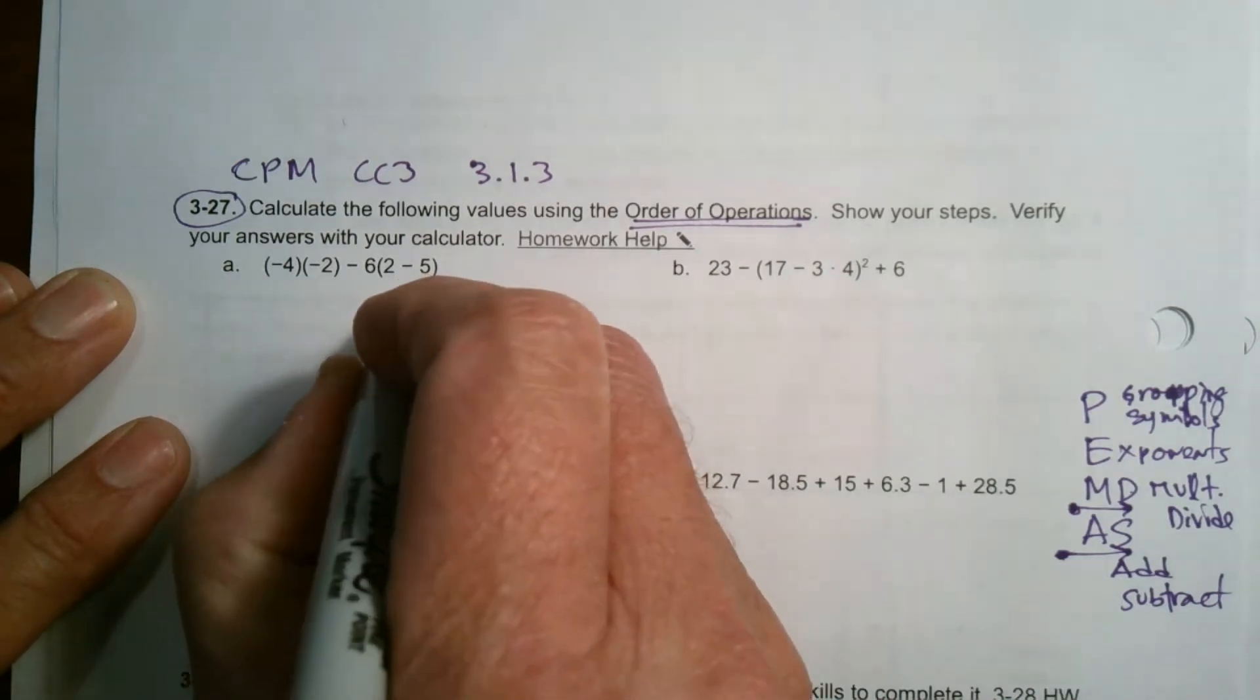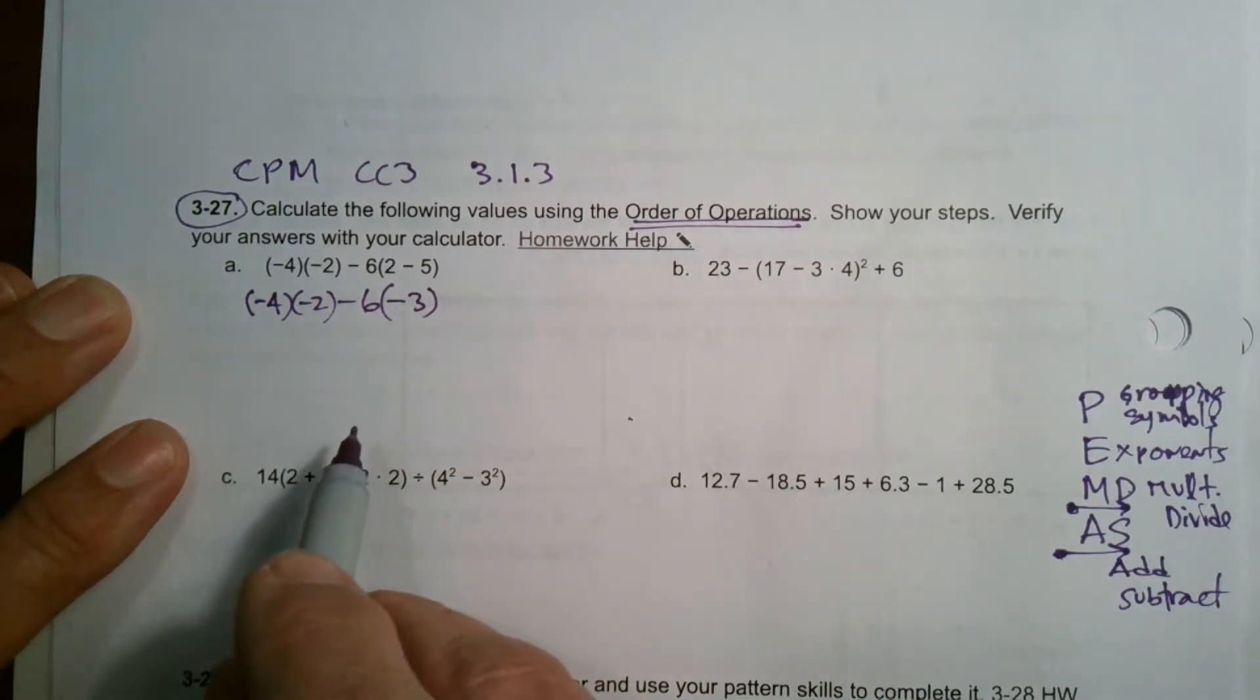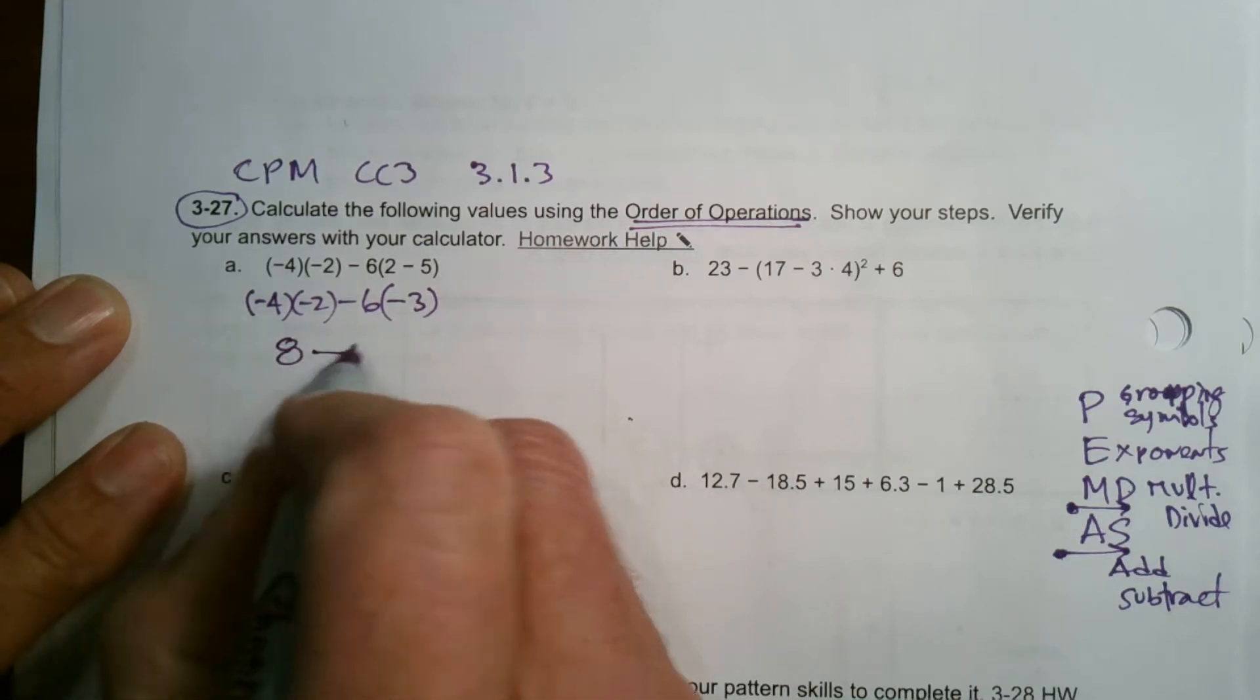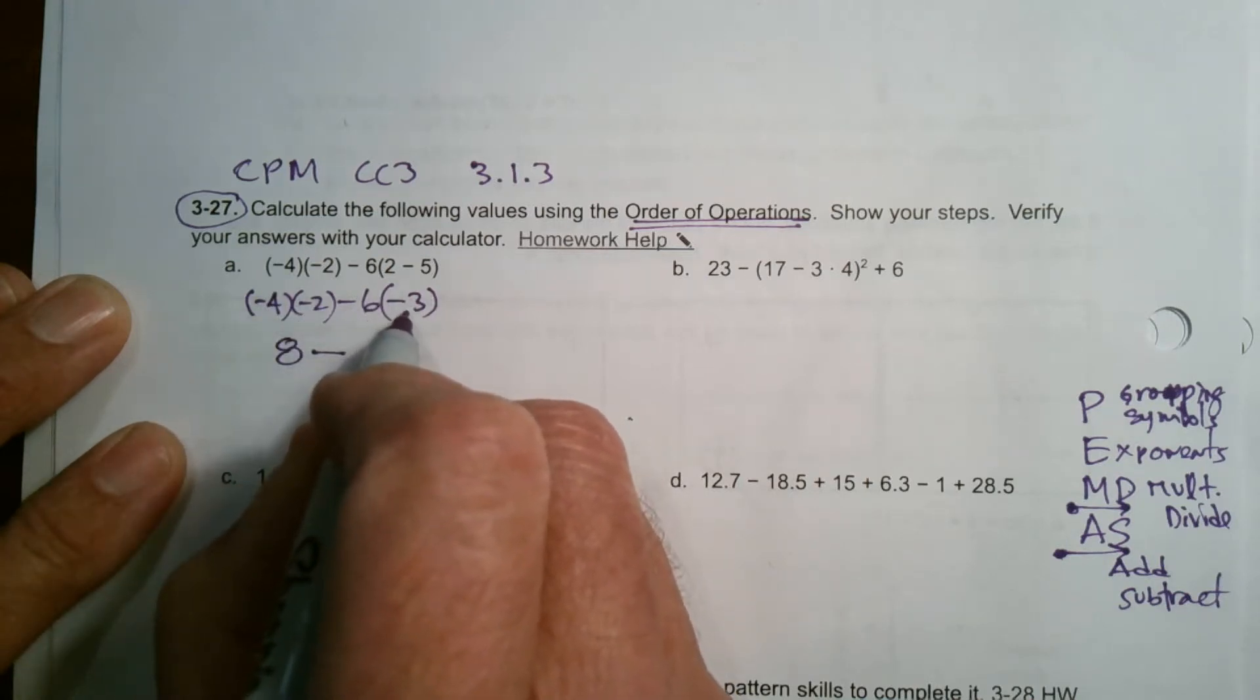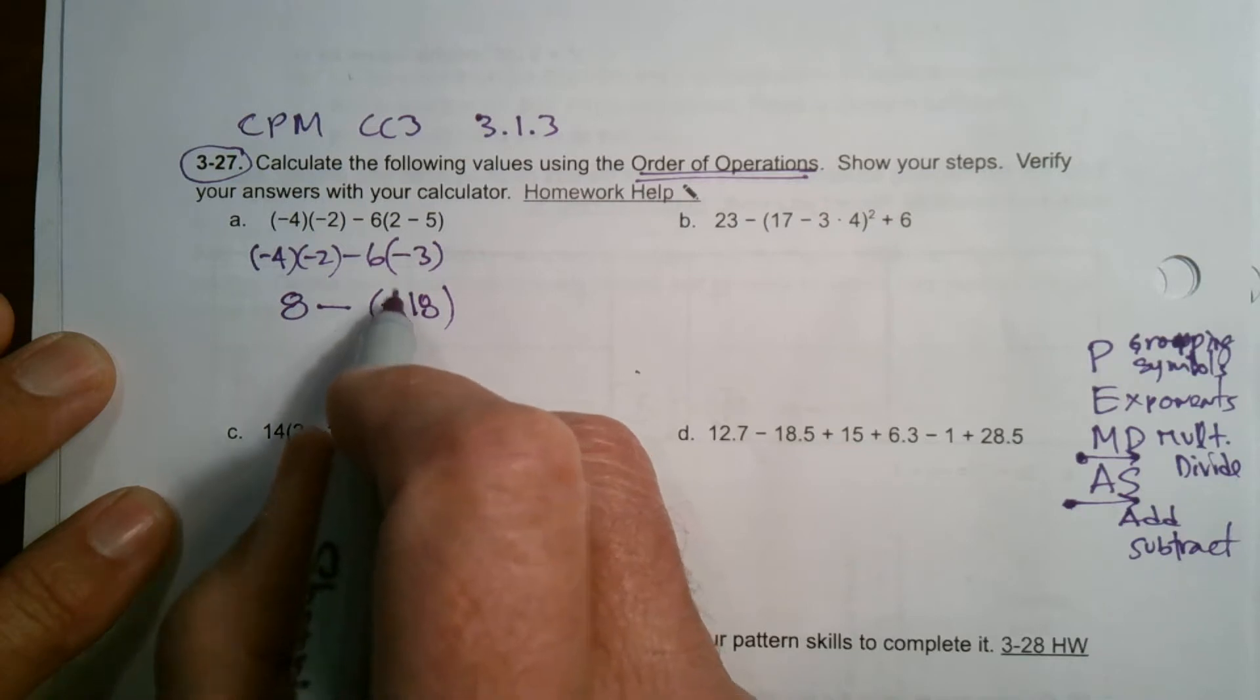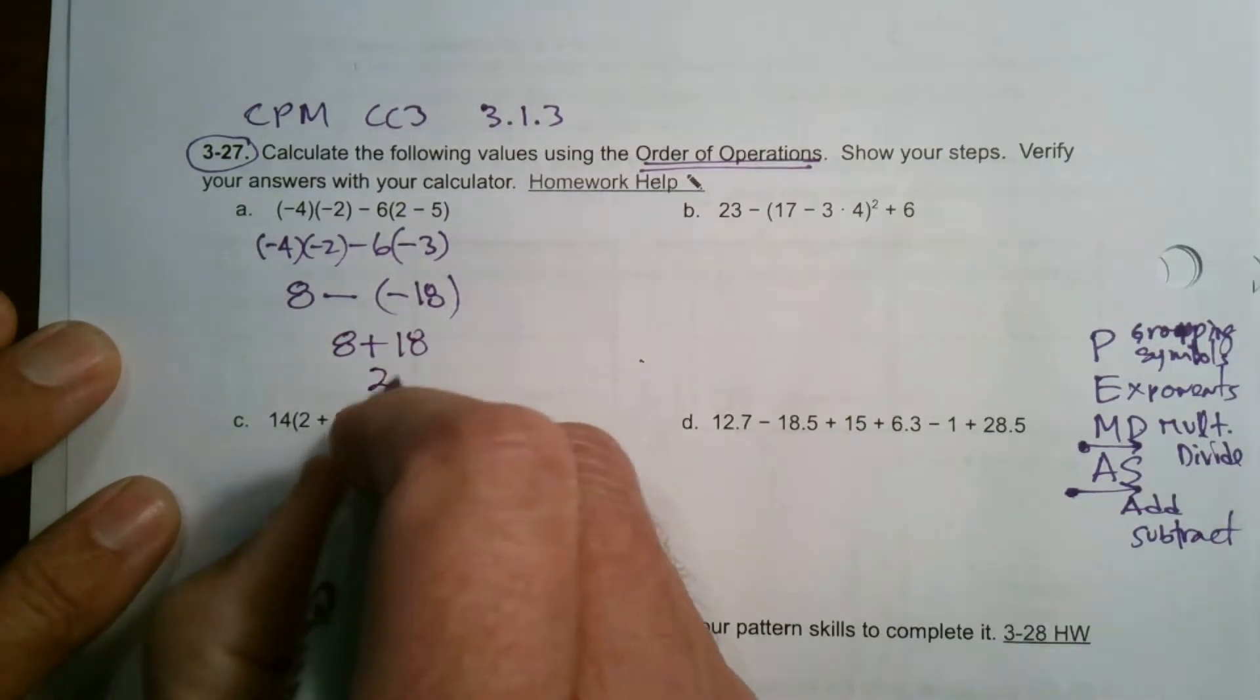Two minus five is negative three. So now I'm going to rewrite. Now I have negative four times negative two minus six times negative three. So now I have multiplication, multiplication and subtraction. What comes first? Multiply before you subtract. Negative four times negative two is positive eight minus, and then I can just multiply straight across. Six times negative three is negative 18. So now I have eight minus negative 18. When I subtract a negative, subtracting a negative is adding the opposite. It all becomes addition. You're minus a negative, so minus a negative all changes to addition. And so eight plus 18 is 26. There's my first answer.